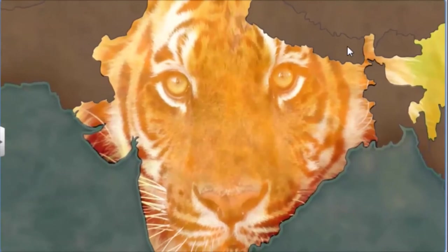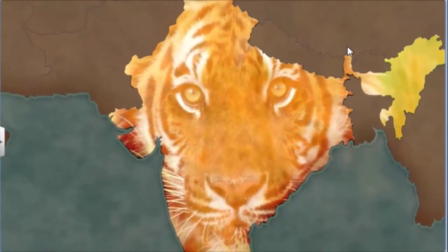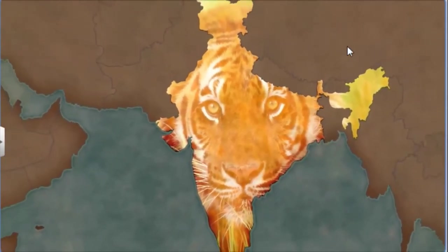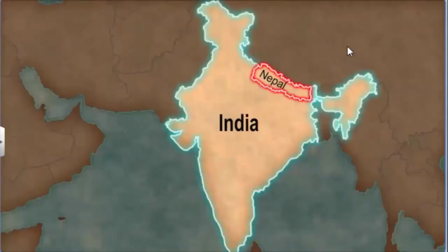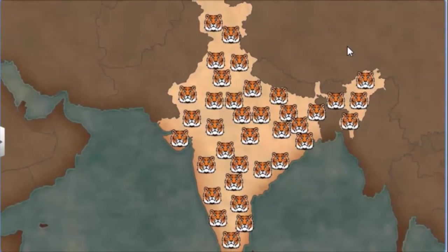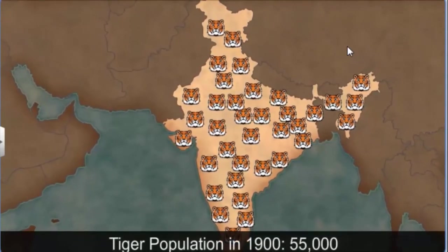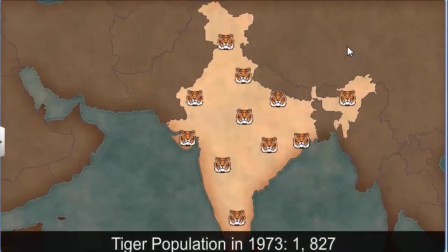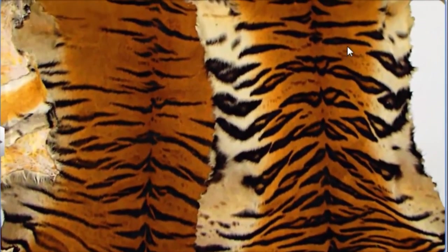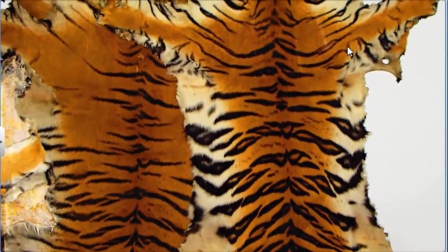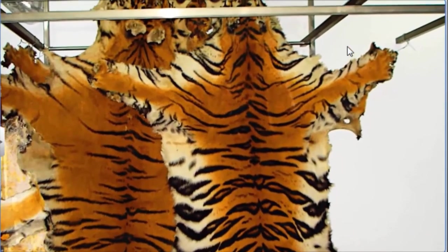One conservation project that requires special mention in India's wildlife conservation efforts is dedicated to our national animal, the Royal Bengal Tiger. This program is called Project Tiger. India and Nepal are home to about two-thirds of the tiger population in the world. At the beginning of the 20th century, there were an estimated 55,000 Royal Bengal tigers in the wild. By 1973, this population had dwindled alarmingly to just 1,827. The main reason for such drastic decline was poaching for lucrative trade in tiger skin, claws, bones, and other body parts used in traditional medicines.